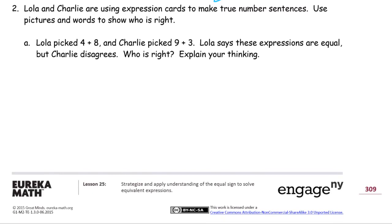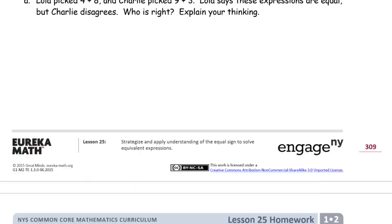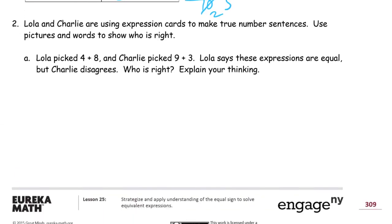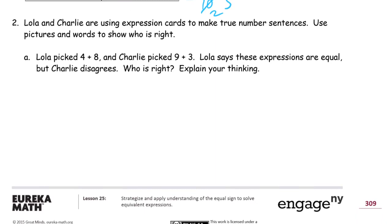Lola and Charlie are using expression cards to make true number sentences. Use pictures and words to show who is right. So let's see, we have 1, 2, A, B, C, there's three parts to this question, here's just the first part for Lola and Charlie. Lola picked 4+8, remember the expression cards that we use in class sometimes? Hopefully you use them too. She picked 4+8, that's her card, and Charlie picked 9+3, that's his expression card. Lola says these expressions are equal, but Charlie disagrees. Who is right?